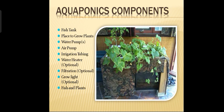Now, what are the components used in this method? The first one is the fish tank and a place to grow plants, water pumps, air pumps, irrigation tubing, water heater, filtration, grow lights, and fish and plants.